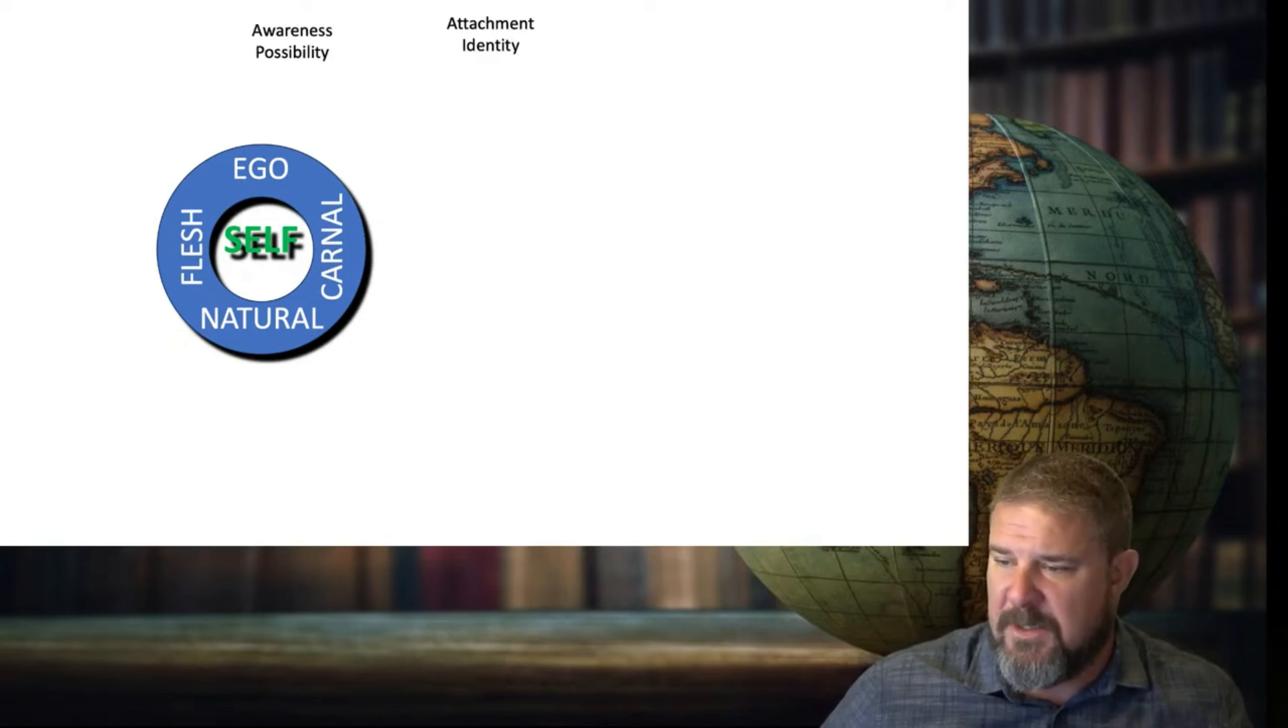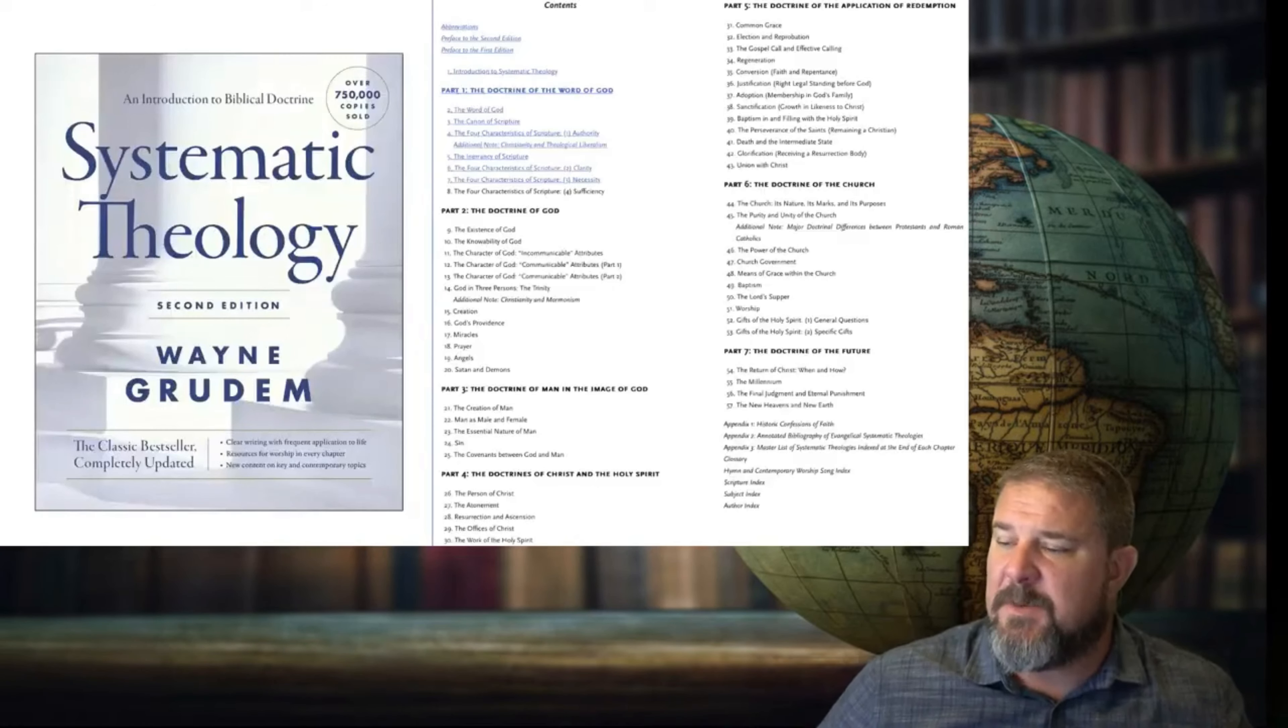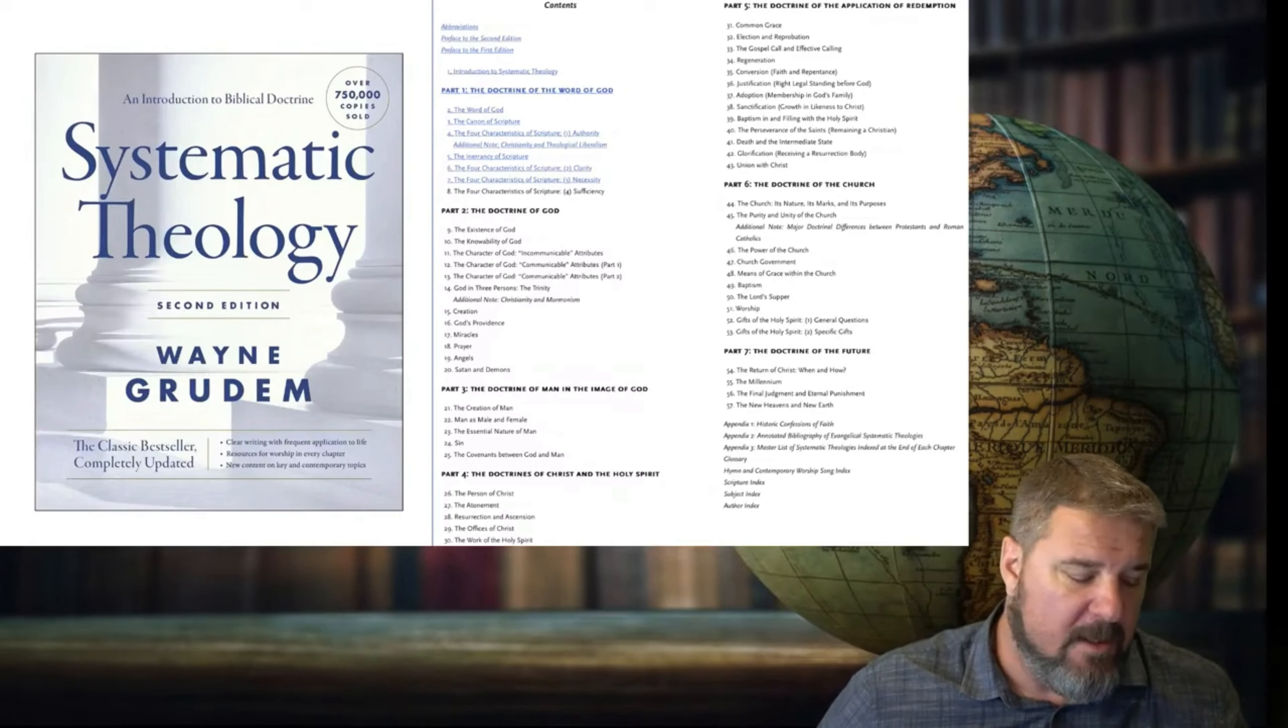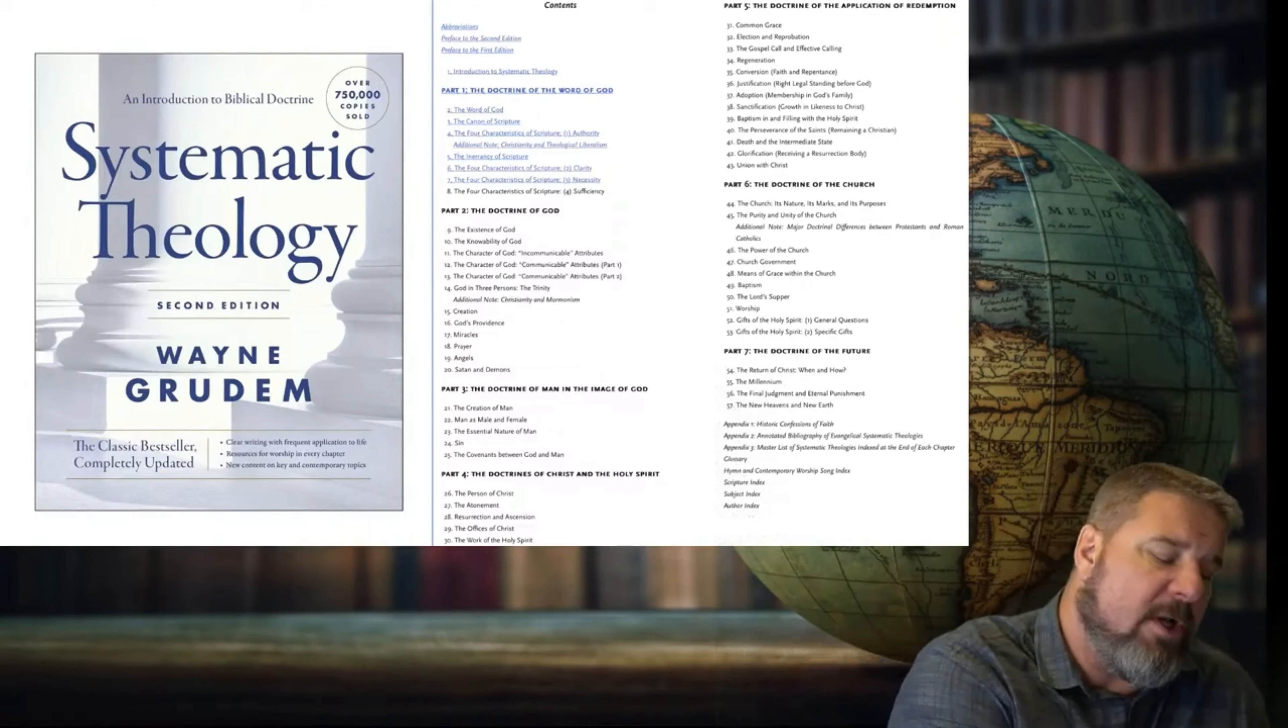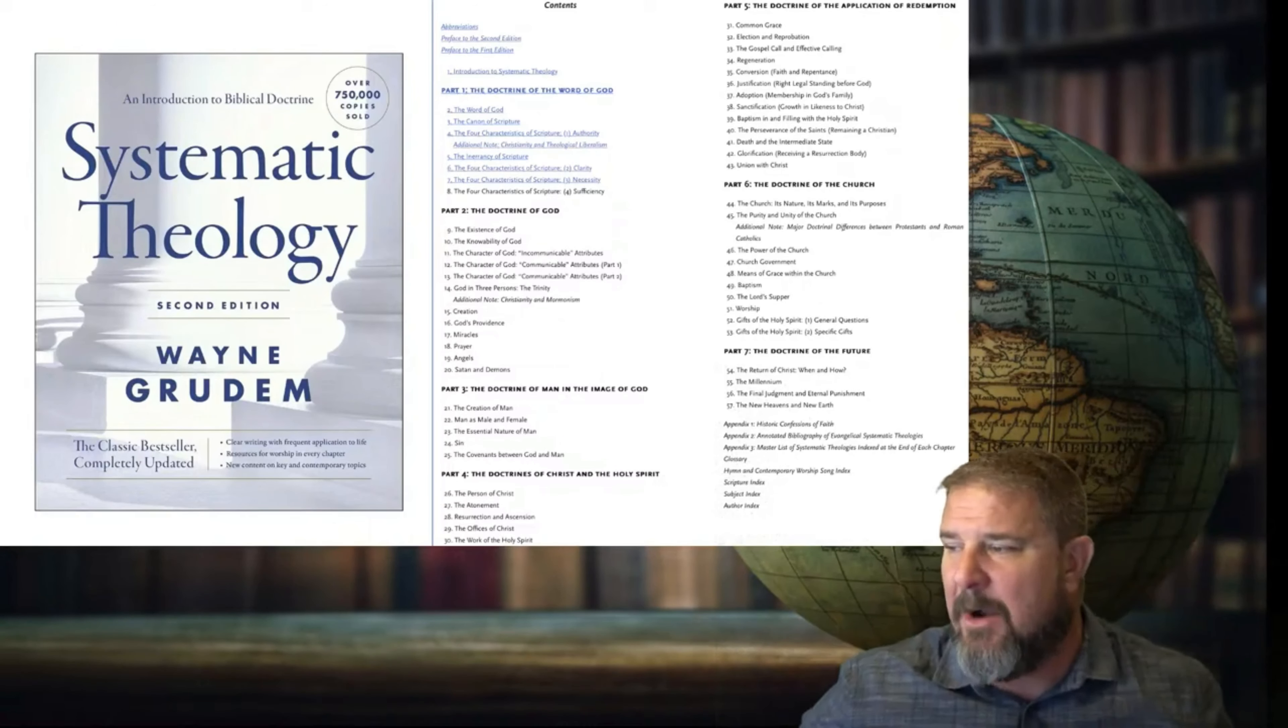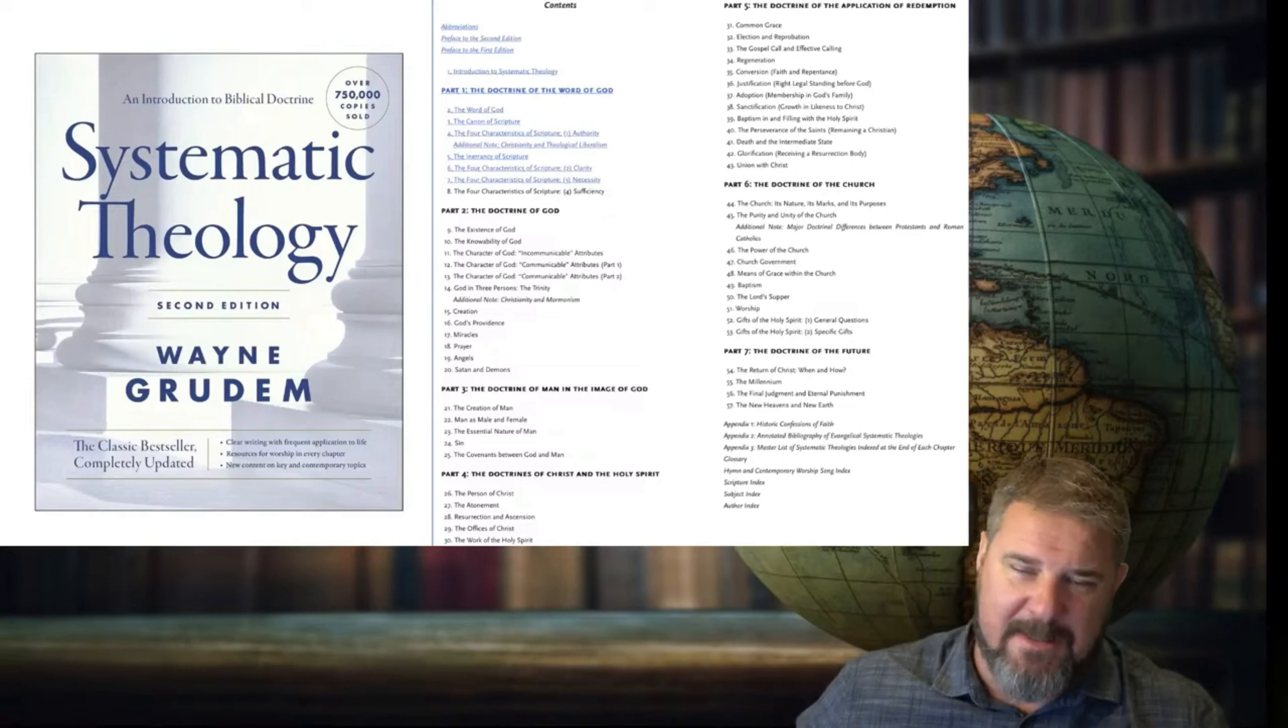So what we're going to do is a little exercise, okay? We're going to take some concepts from the table of contents of Wayne Grudem's Systematic Theology, 2nd Edition. And we're going to look at them through the lens of how you should relate to them.